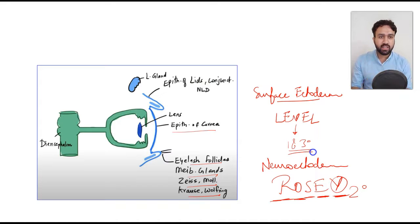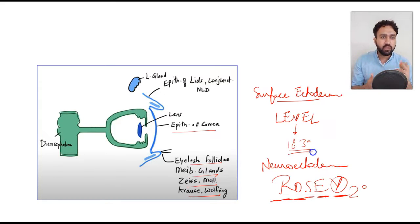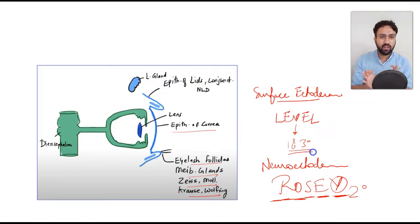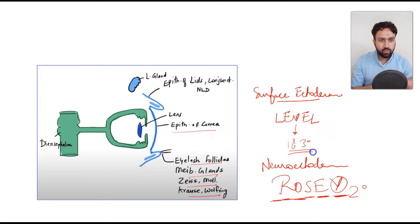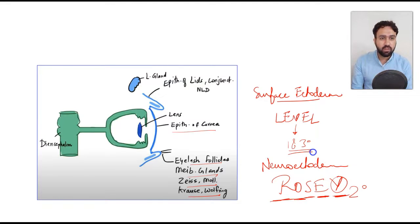So far you have to remember two mnemonics: LEVEL and ROSEV. LEVEL is from surface ectoderm — another way to remember surface ectoderm derivatives is: lens, external surface, and tears. For neuroectoderm, remember the mnemonic ROSEV or remember the neural elements of the eye to figure out the five structures coming from neuroectoderm.